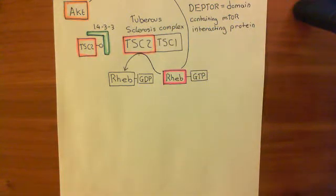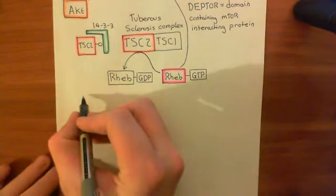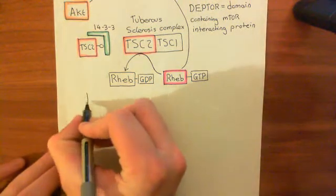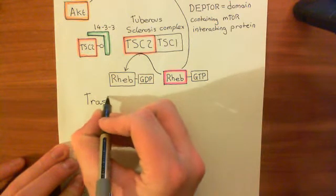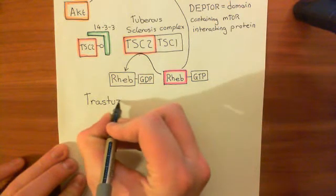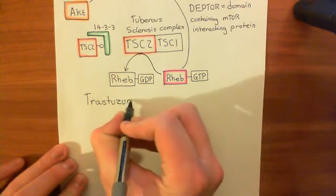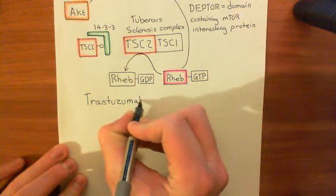Now what I want to talk about is a very famous drug which can be used to treat this as a chemotherapy agent against breast cancer. That drug has the name trastuzumab, and as the name suggests, it's a monoclonal antibody. Trastuzumab, and its target basically is the HER2 receptor.